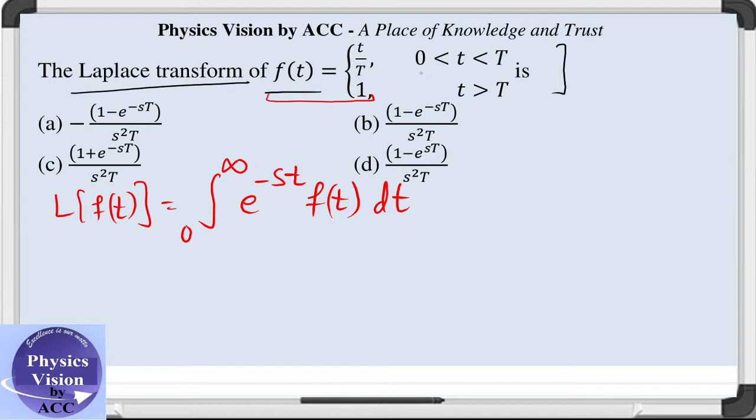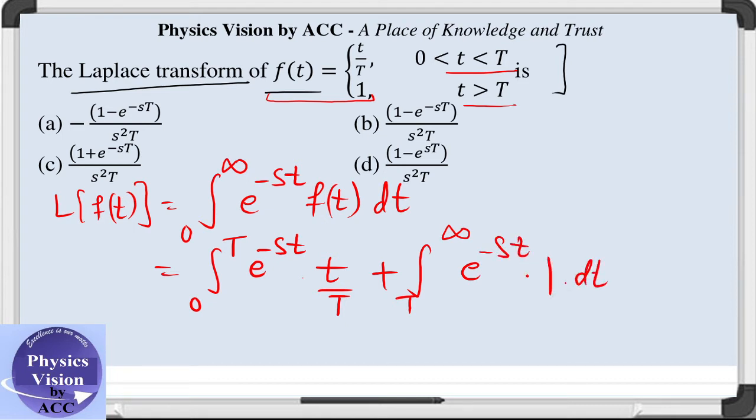What will we do? Since the limits are given from 0 to capital T and capital T to infinity, we will split this part into two integrals from 0 to capital T e raised to the power minus st into t by T, and second factor is from capital T to infinity e raised to the power minus st into 1 dt.